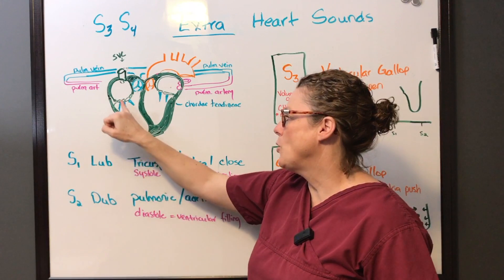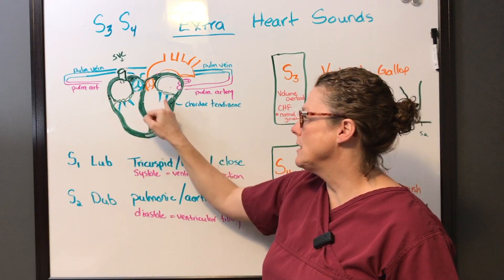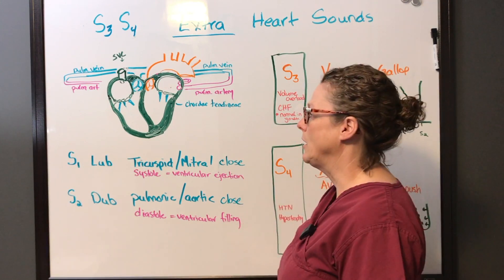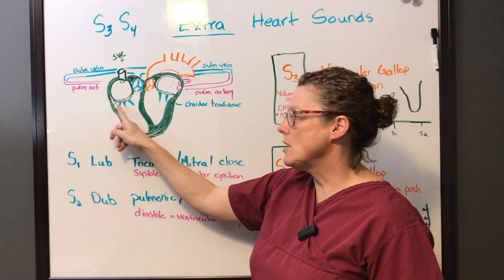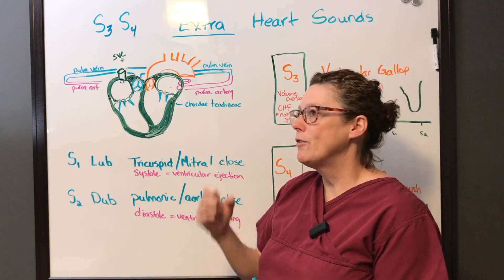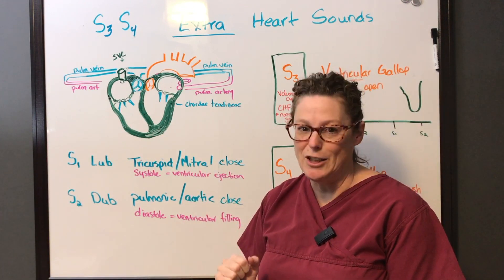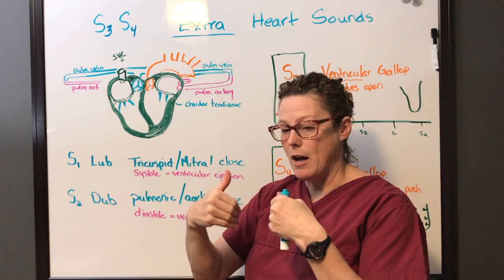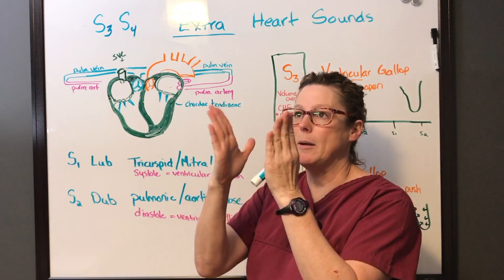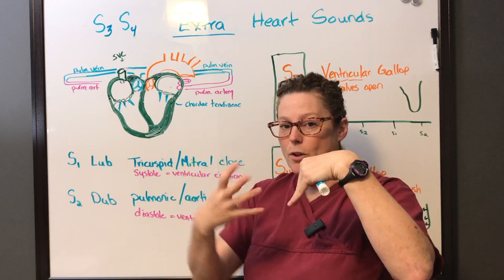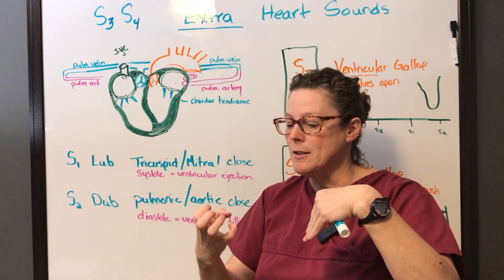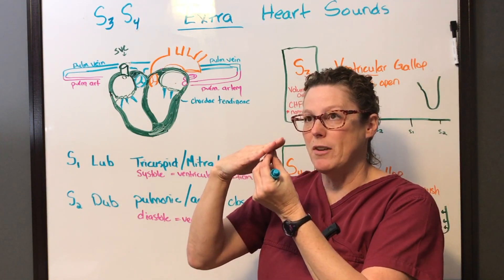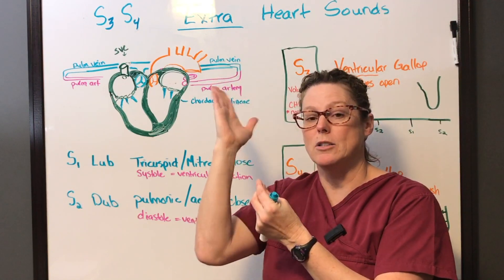What I didn't talk about in our first video is the chordae tendineae. I've drawn those in today because the chordae tendineae have a role to play in those extra heart sounds. Essentially, they're fibrous cartilage that holds onto those flaps of the valve to prevent them from hyperextending. As the flap opens, the chordae tendineae relax, and when they close, they're tense and at their longest, preventing the valves from going too far back into the atria.